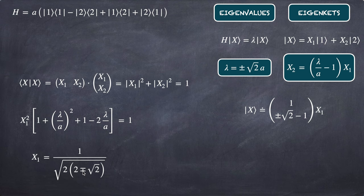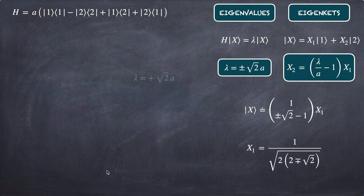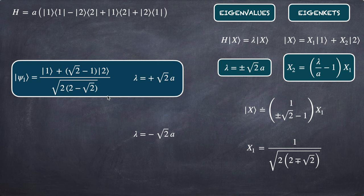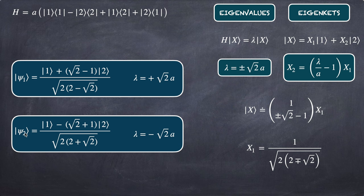We have two solutions. When λ = +√2·a, the eigenket ψ₁ is proportional to |1⟩ + (√2 − 1)|2⟩, normalized by the factor √(4 − 2√2). When λ = −√2·a, the eigenket ψ₂ is proportional to |1⟩ + (−√2 − 1)|2⟩, normalized by the factor √(4 + 2√2).